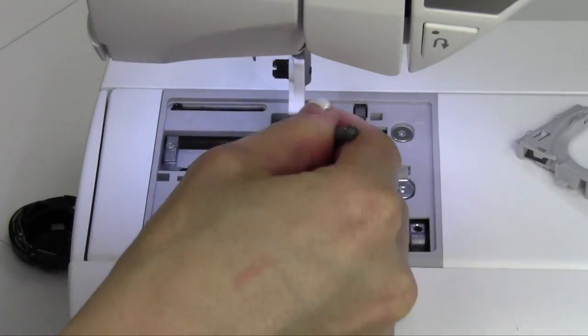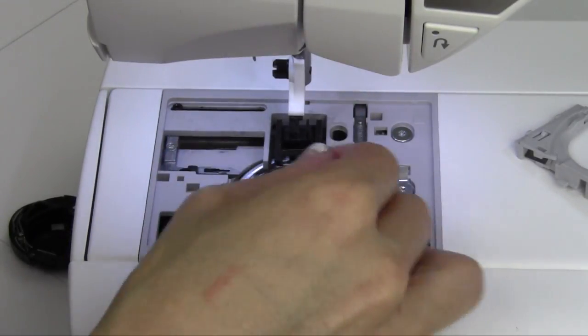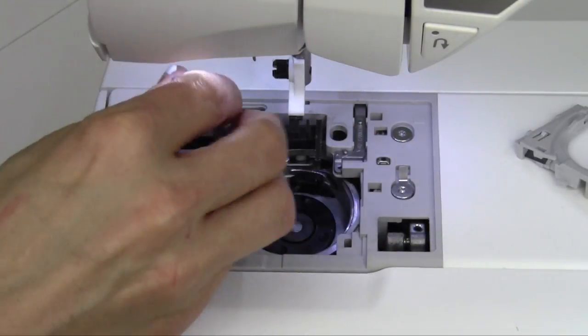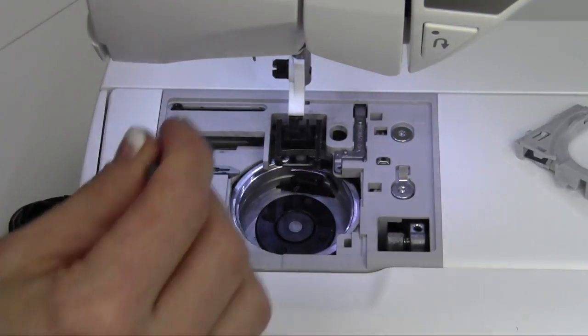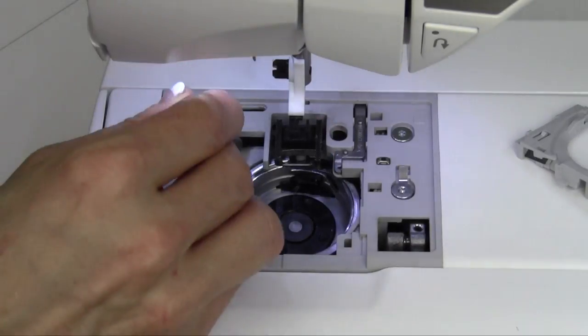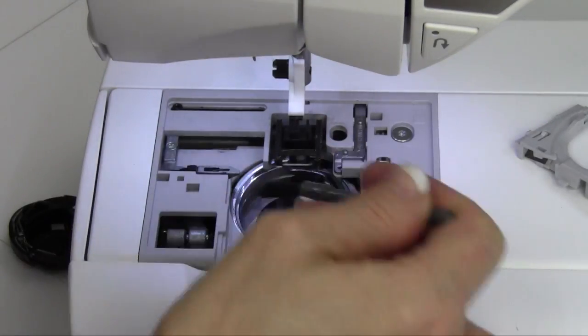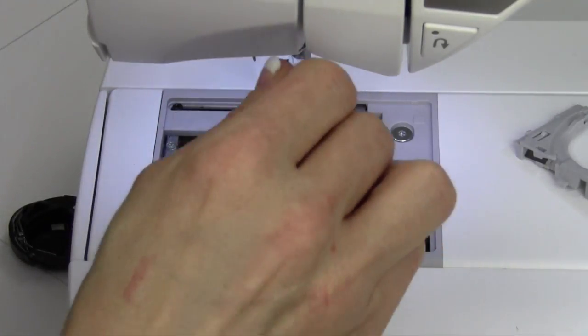I do see some extra lint still down in this area. Oh yeah. As you do this, you want to do this about every three to four bobbins that you're sewing through because it really is going to start to pile up. Fleeces and flannels tend to be very linty fabrics and too, if you pick thread that's very linty, that's going to just be kind of a culprit and you're just going to always need to be cleaning.